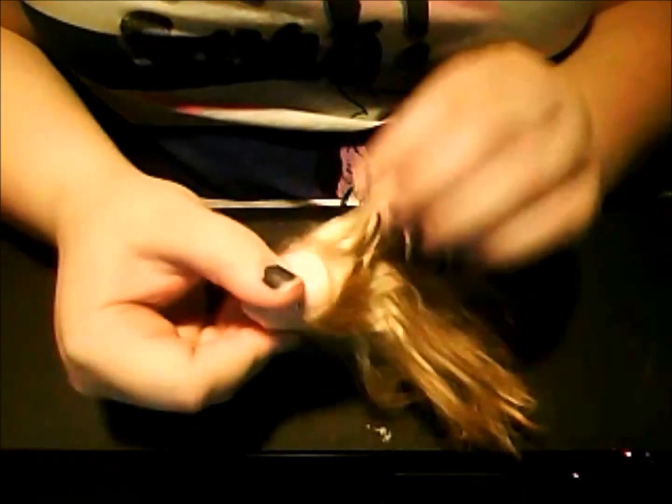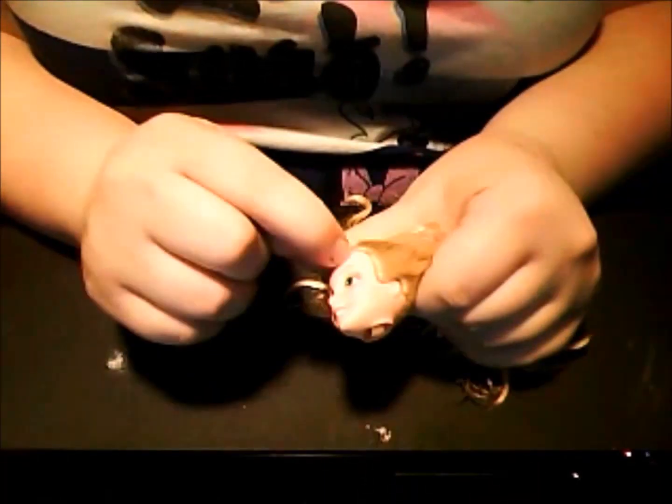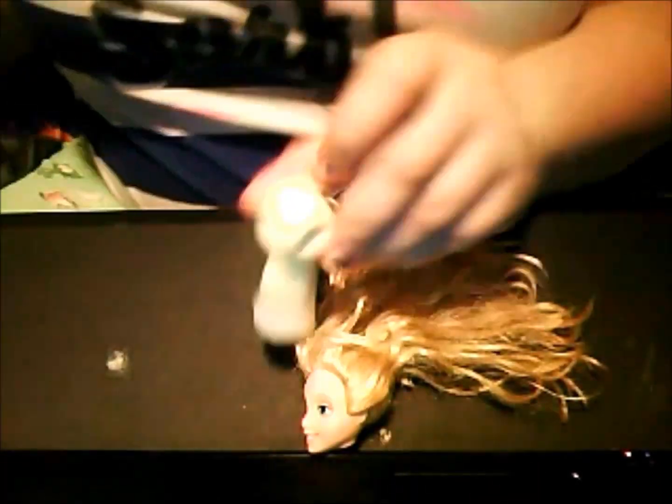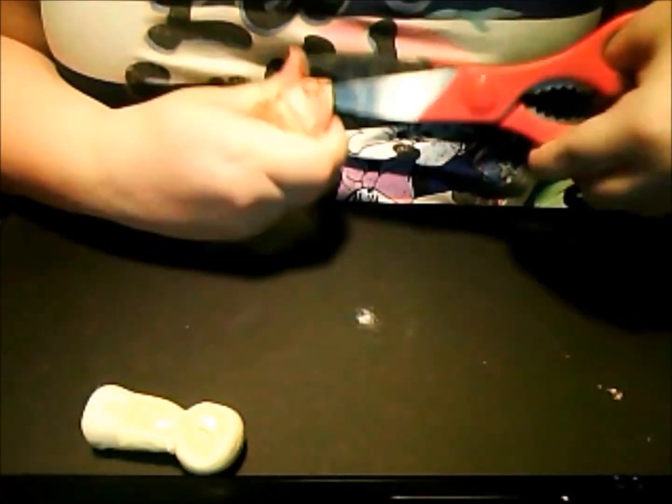Get an old doll head. You can get any kind of hair color you want. I wanted blonde so I could make it blue and red like mine. You want to cut the middle of the face in half. Keep the back of the head with the ears.